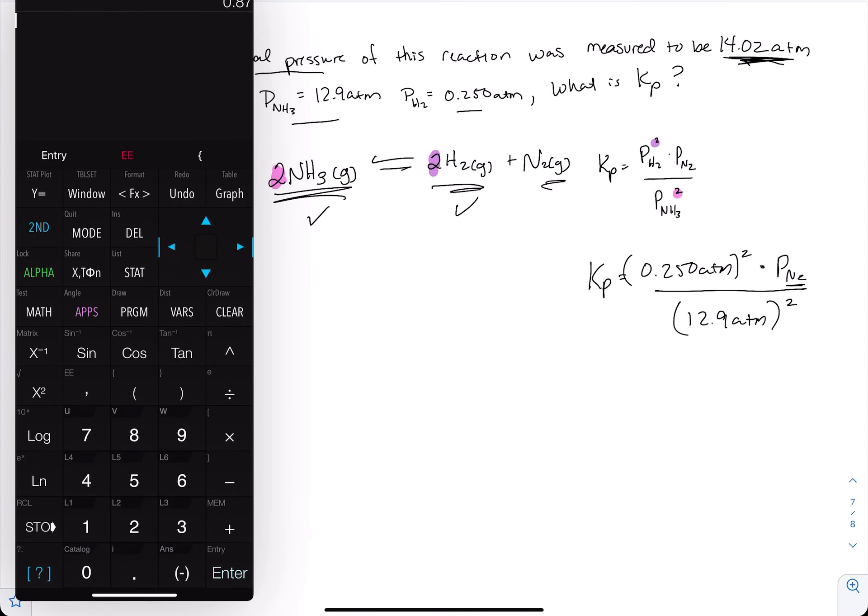So now over here I put 0.87. That's kind of like a little trick with this. Then to get the Kp, I just plug it all in. So I take that number times 0.250 squared divided by 12.9 squared.